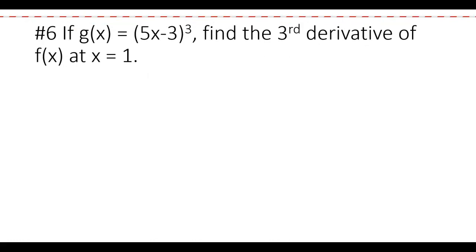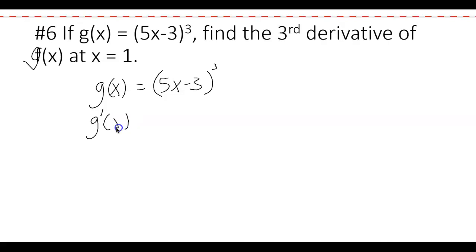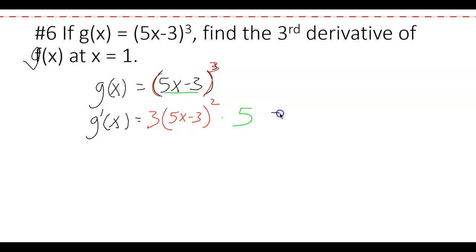Question 6: if g(x) = (5x − 3)³, find the third derivative at x = 1. Starting with the first derivative using the chain rule: bring the power to the front, reduce the exponent by 1, keep the inside the same, then multiply by the derivative of the inside (5). Multiplying 3 times 5 gives 15, so g'(x) = 15(5x − 3)².